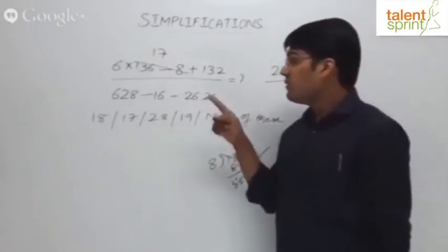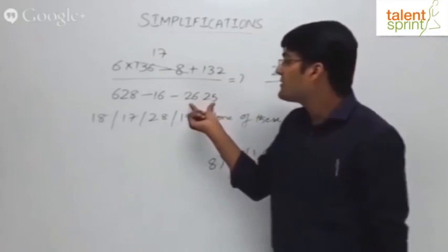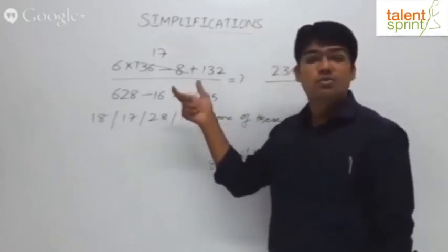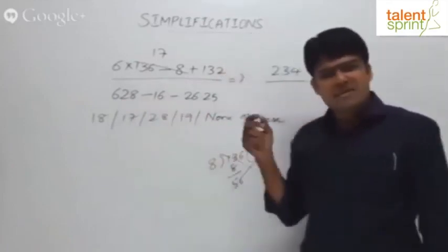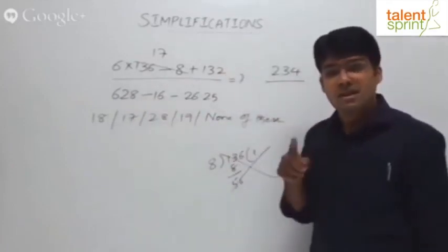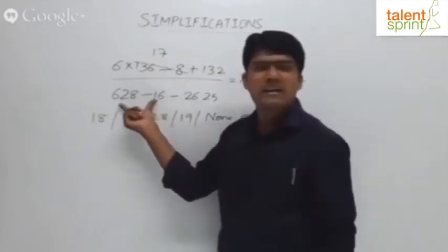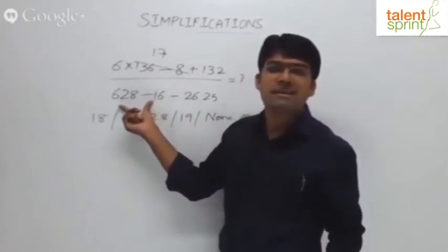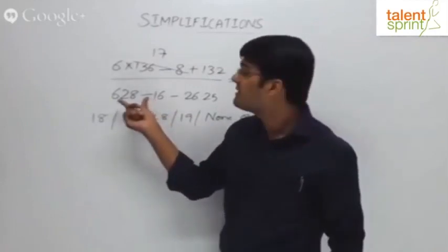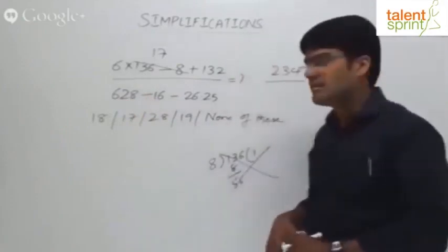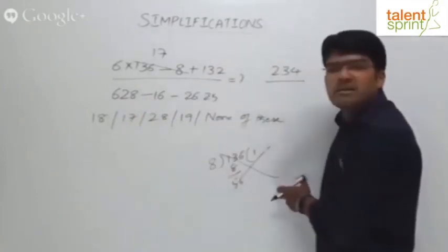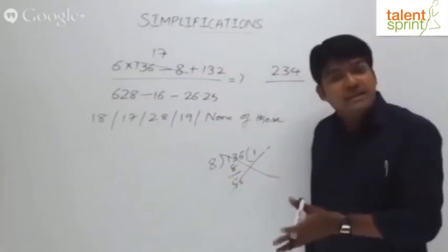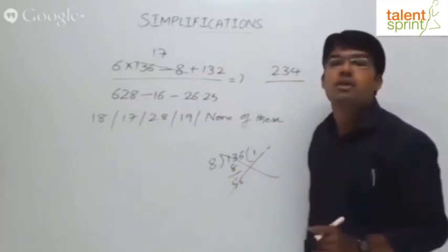Now look at this. The denominator is going to be a little complicated because we have decimal parts here, so do it carefully. 628 divided by 16. This is where I believe most of you will get stuck. There is no point in doing that on paper again. If you start doing it that way, your method is wrong. You should be able to divide 628 by 16 orally, mentally.